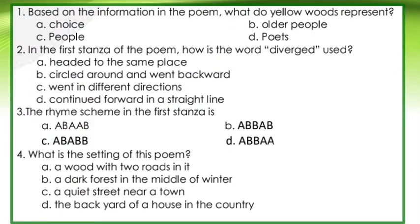Question 1: Based on the information in the poem, what do yellow woods represent? A. Choice B. Older people. C. People. Or letter D. Poets. Question 2: In the first stanza of the poem, how is the word 'diverged' used? A. Headed to the same place. B. Circled around and went backward. C. Went in different directions. D. Continued forward in a straight line.